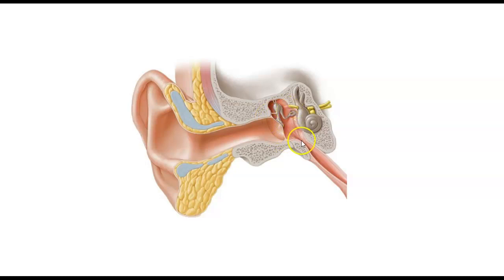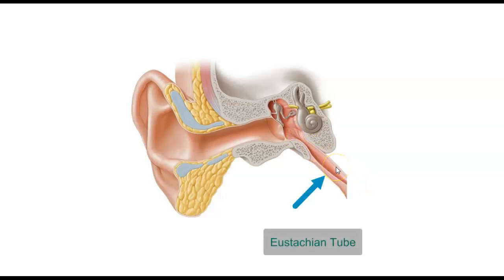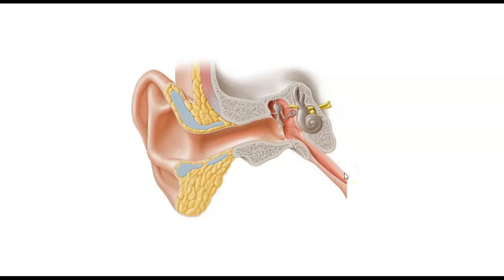The middle ear is also an extension of the nasopharynx. This area is called the Eustachian tube, which is responsible for maintaining air pressure and helping ventilate the middle ear. Normally the tube is closed but opens while someone is chewing or swallowing. When this tube is open, the air pressure between the outer and middle ear is equalized, which optimizes sound transmission through the eardrum.